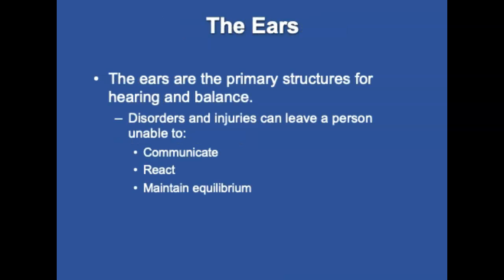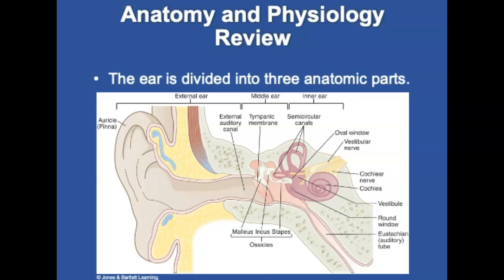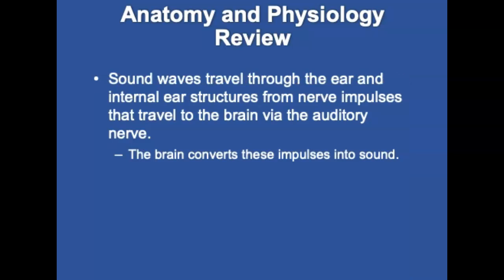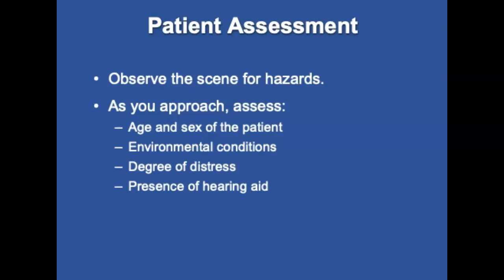The ears are the primary structures for hearing and balance. Disorders and injuries can leave a person unable to communicate, react, and maintain equilibrium. Changes in ear pressure can cause discomfort, and tumors on cranial nerves can affect inner ear balance, facial sensation, eye movement, facial movement, taste, and hearing. The ear is divided into three anatomic parts: external, middle, and inner. Sound waves travel through the ear, and internal ear structures form nerve impulses that travel to the brain via the auditory nerve, which converts these impulses into sound. Possible ear injuries include foreign objects, ear infections, or blast pressure waves which can burst the eardrum.